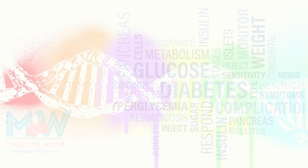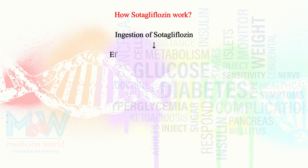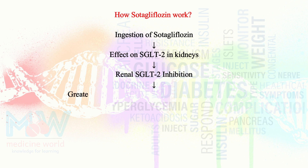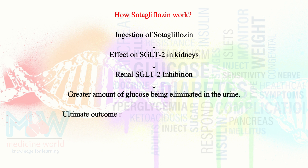Sodagliflozin also inhibits SGLT2 in the kidneys. Upon ingestion, the effect on renal SGLT2 causes inhibition that leads to a greater amount of glucose being eliminated in the urine, with the ultimate outcome being reduced blood glucose levels.